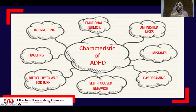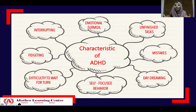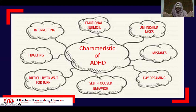The next characteristic is interrupting — they interrupt others while talking or barge into conversations or games they are not part of. They may also use other people's things without permission. Because they have difficulty waiting, they can't wait for the owner to give permission, so they might just snatch the thing away.